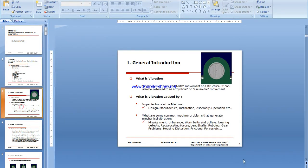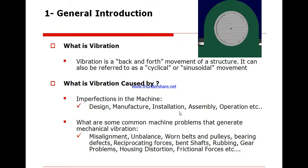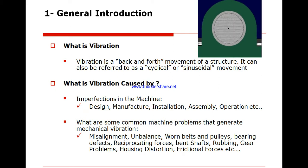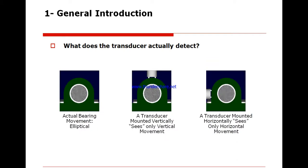Vibration is a backward and forward cyclical movement, and it is used to study imperfections in machinery. We measure it to assess the condition of a machine in order to prevent catastrophic failure and make changes before any problem happens.